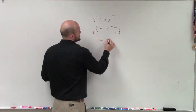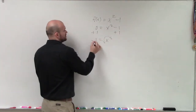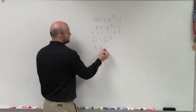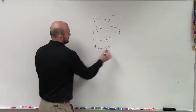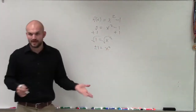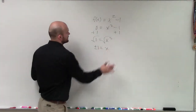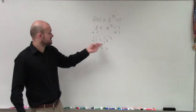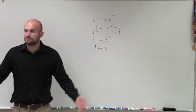Using the square root method, I take the square root of both sides and get plus or minus 1 equals x. So the zeros of x squared minus 1 are x equals positive 1 and x equals negative 1.